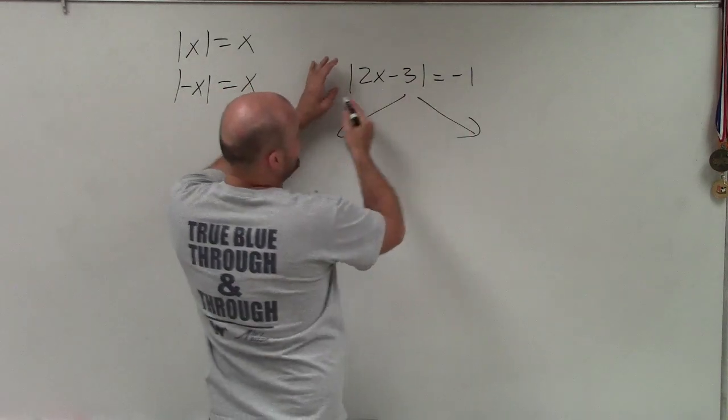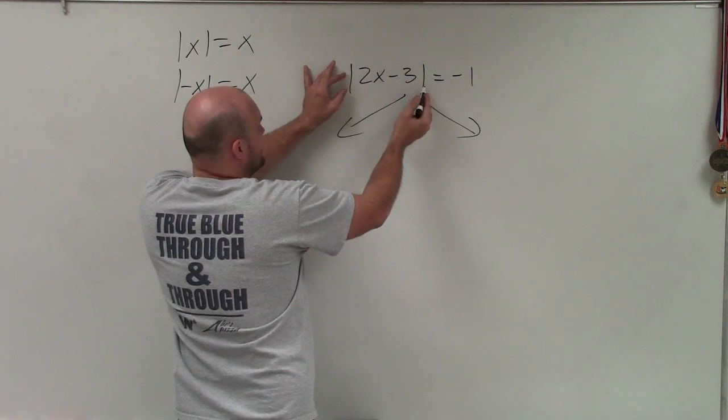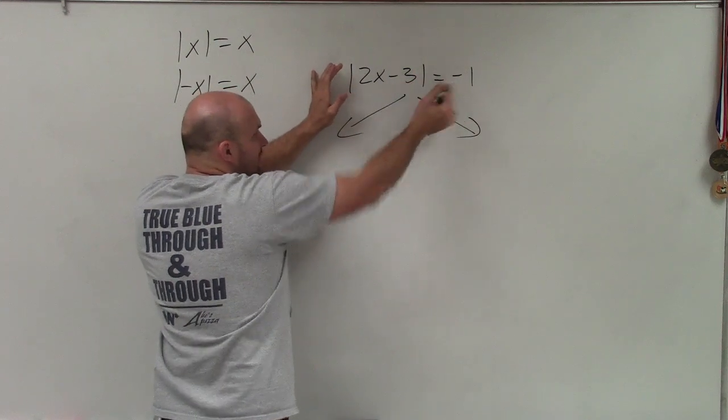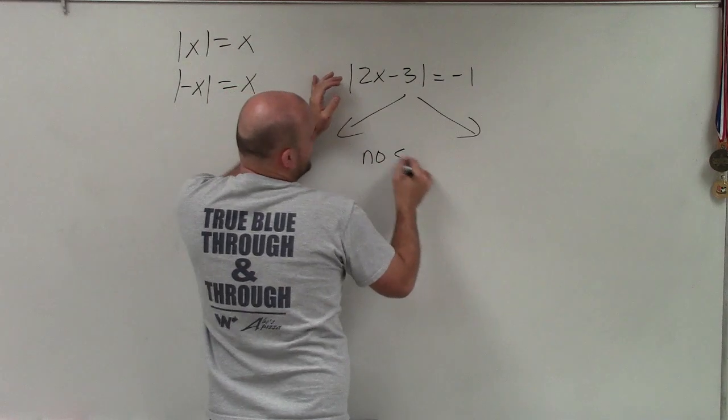So in this case, my absolute value is isolated, but we're saying the absolute distance is negative. Well, that's impossible. So therefore, there is no solution.